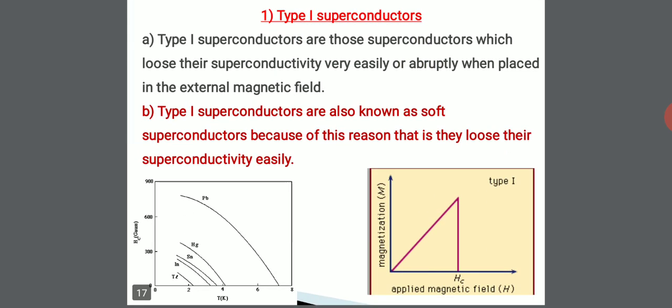In type 1 superconductors, if you increase the magnetic field, the magnetization increases linearly. After reaching a certain magnetic field called the critical magnetic field, the magnetization suddenly becomes zero. These materials are called type 1 superconductors.